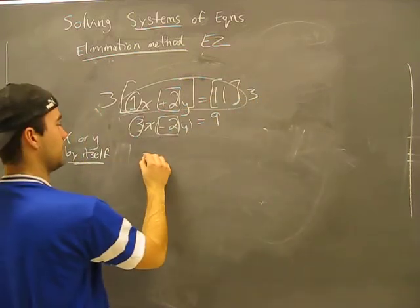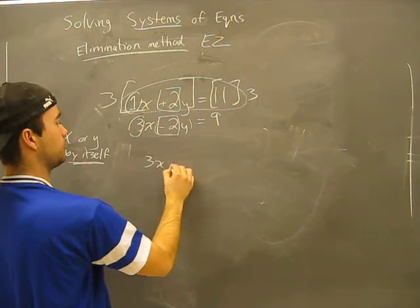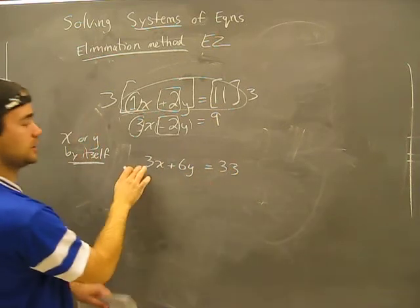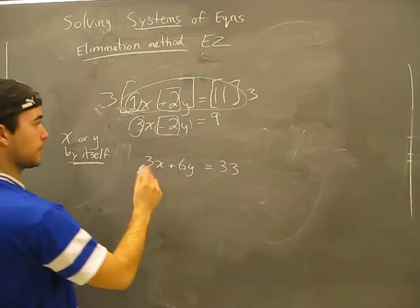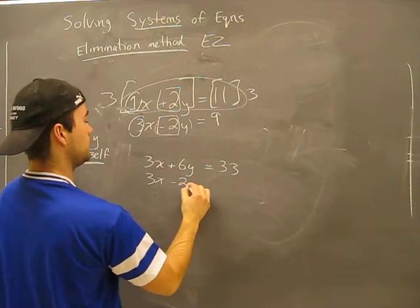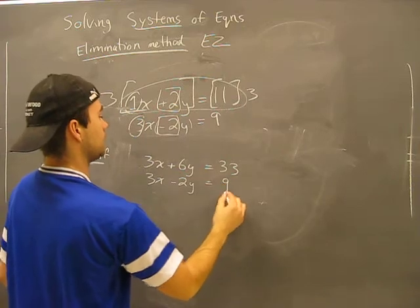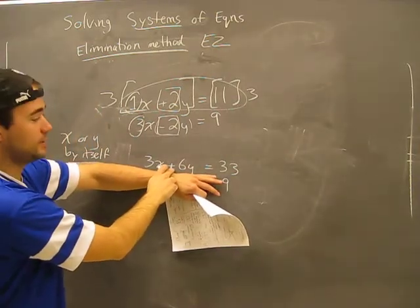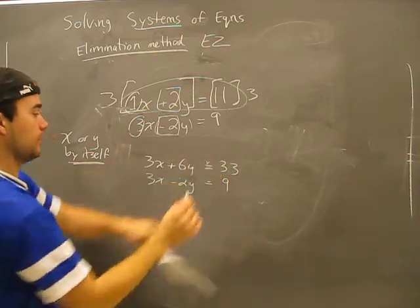So I'm going to clear it up here. So now I have 3x plus 6y equals 33. This is my new top line. Then below what I have 3x plus 2y equals 9. But this is a different way to view the same equation, still true.